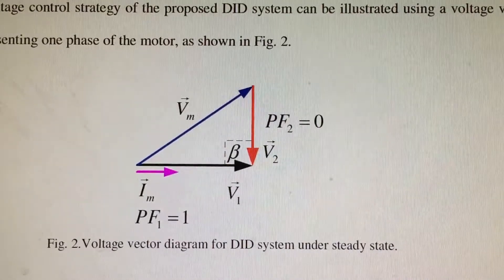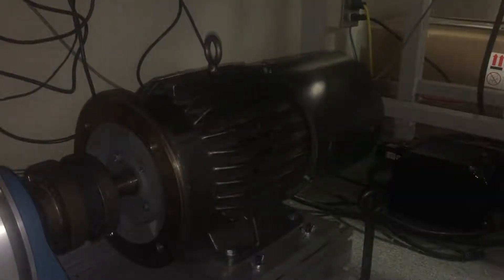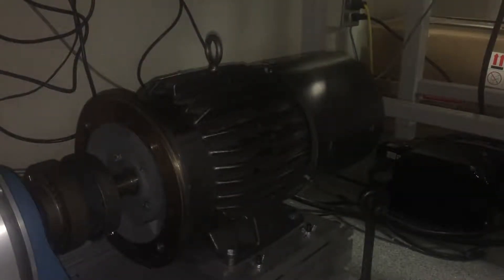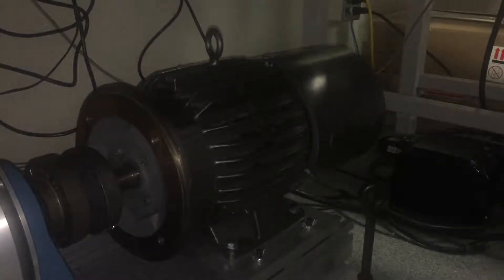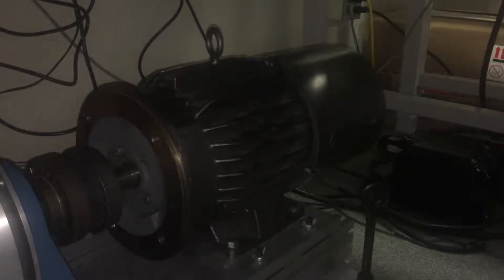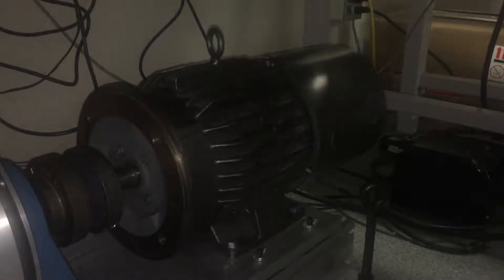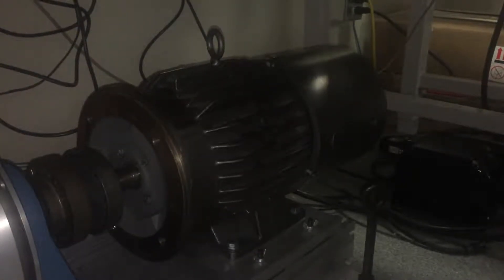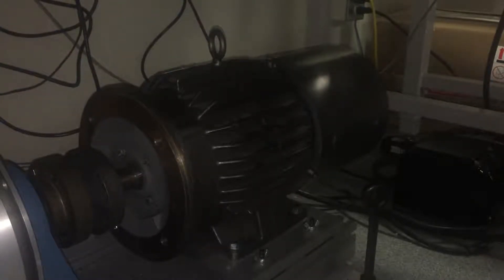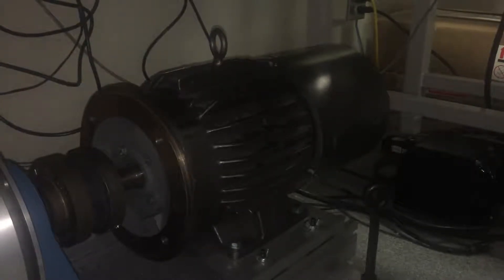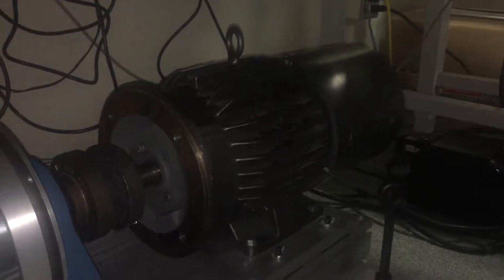The voltage applied to the winding of the open-ended winding induction motor is Vm, which is the vector difference between V1 and V2. This is a 5-horsepower open-ended winding induction motor with a rated voltage of 230 volts and a rated current of 13.6 amperes.